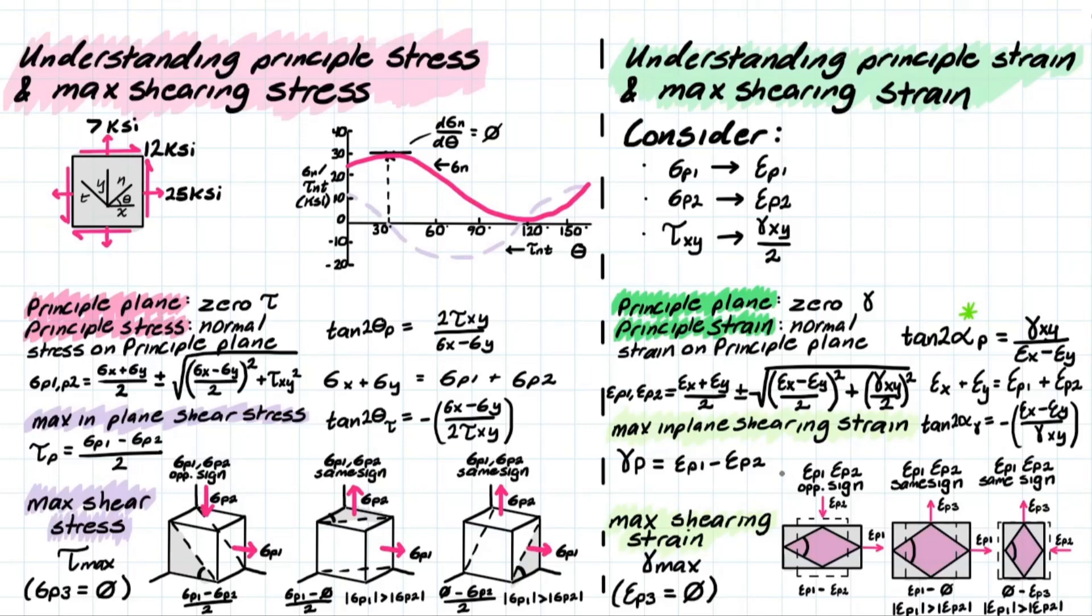Then, looking into the max in-plane shearing strain, we have a very similar concept. We're going to see this in the problem, but we actually have a 45 degree difference between where this alpha P is going to be and where this alpha for the shearing strain or the max in-plane shearing strain is going to be.